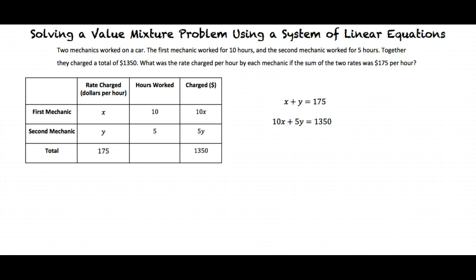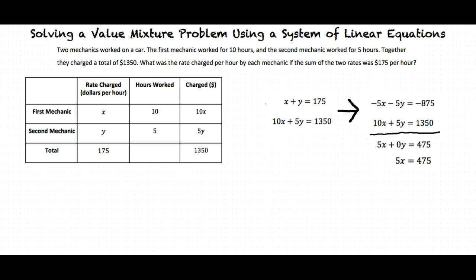That's right. We can multiply this equation by negative 5, and we get negative 5x minus 5y is equal to negative 875. Now if we add the two equations together, we get 5x plus 0y is equal to 475. 0y is just 0, so we really have 5x is equal to 475. We can divide both sides by 5, revealing that x is equal to 95.